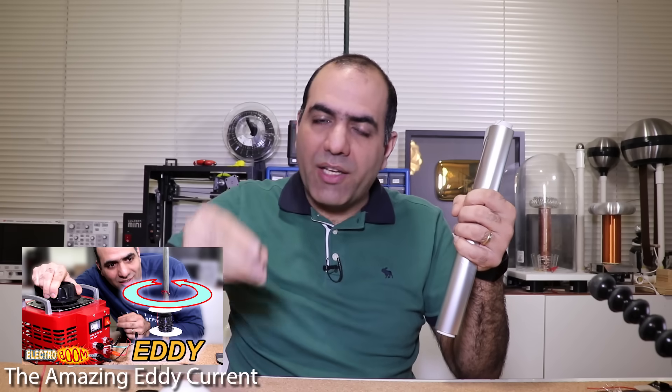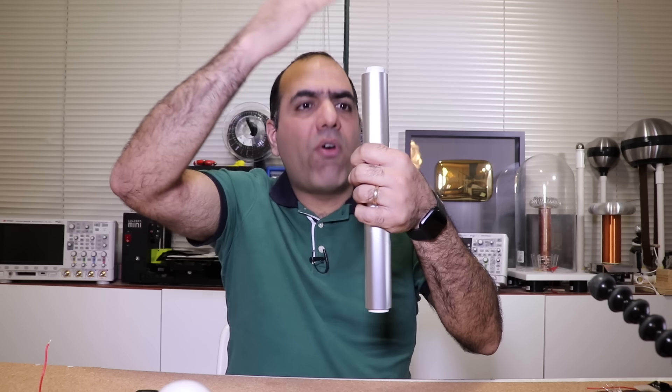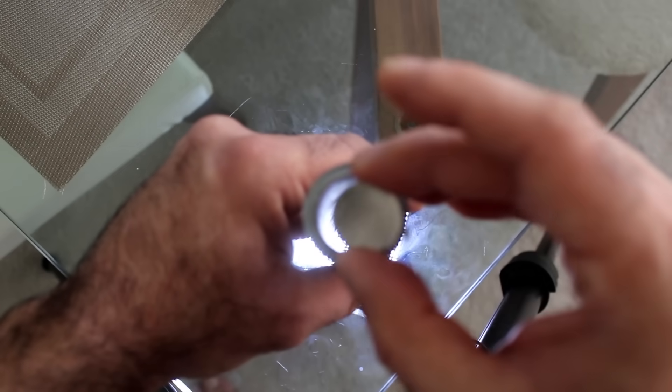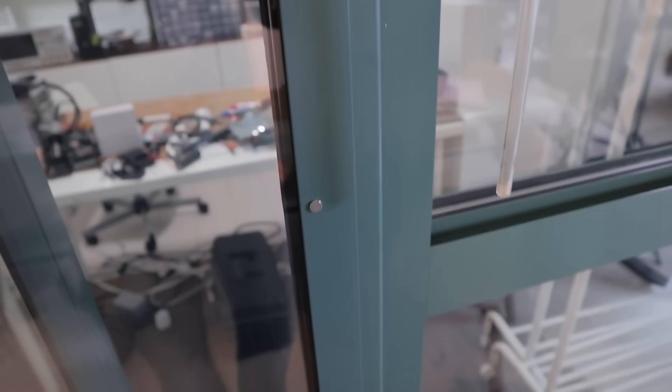I've shown you before that neodymium magnets drop like a rock in air, but if you drop them through a roll of aluminum foil, they drop very slowly. Wheeeee. But similarly, this frame is also made of aluminum and my magnet has north and south on the surfaces. If I put it on and let go, see it goes down slowly.